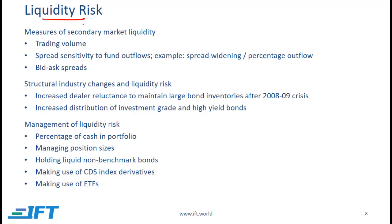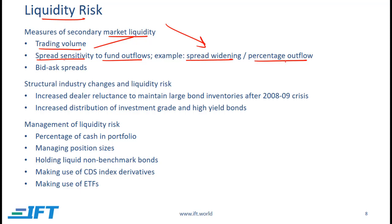In the bond market, liquidity risk is a major concern, so we need measures of market liquidity. One important measure is trading volume — high trading volume means high liquidity; low trading volume implies high liquidity risk. We can also consider spread sensitivity to fund outflows: spread widening in basis points divided by percentage outflow (dollar outflow divided by total assets under management). If this ratio is relatively high, liquidity is low. The most commonly used measure, however, is bid-ask spreads — if bid-ask spreads are high, that implies low liquidity or high liquidity risk.